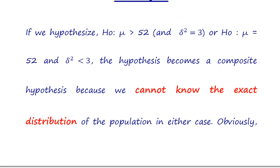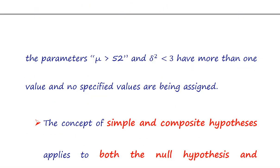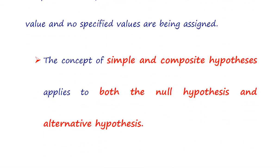There is also a third type of case, where both parameters do not equal the specified value. In the first two examples, one parameter was equal to a specified value — sigma squared in the first and mean in the second. In the third type, both parameters are not equal to any specified value, which is also an example of composite hypothesis.